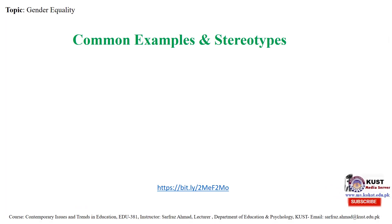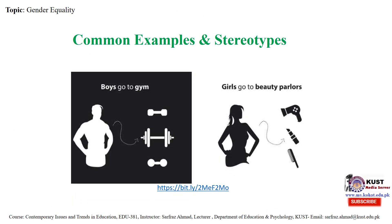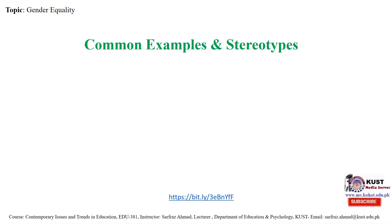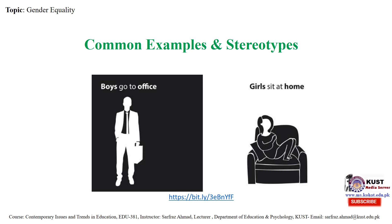Now for some common examples and stereotypes: girls go to beauty parlors and boys go to the gym — these are common examples of gender discrimination. Every gender has its own assigned workplace or interests. For example, boys go to the office and girls stay at home, so males typically work outside while home management is considered the responsibility of women.